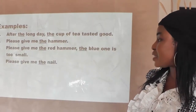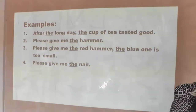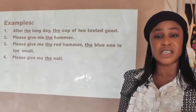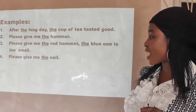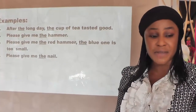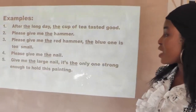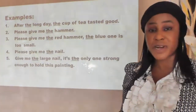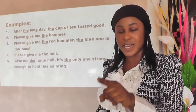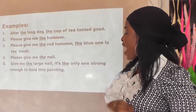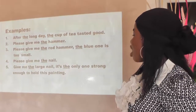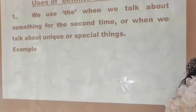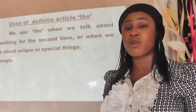'Please give me the nail.' It is a specific nail, not a general one. You could also say 'give me a nail,' but in this case it has been specified — 'give me the nail.' Another example: 'Give me the large nail.' We have many nails, but this person is saying give me the large one. Article 'the' is used because there is a large one among the nails — it is the only one strong enough to hold this painting.